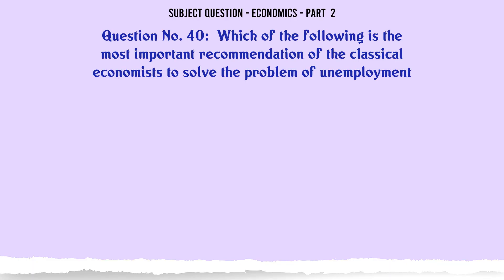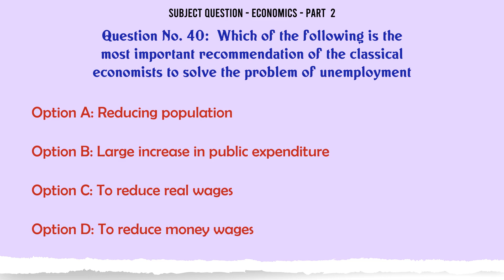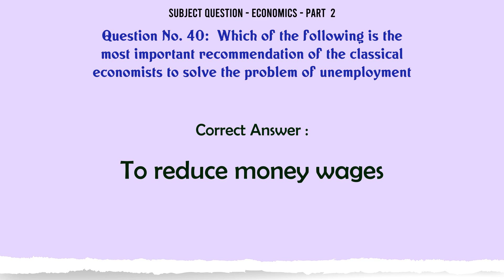Which of the following is the most important recommendation of the classical economists to solve the problem of unemployment? A. Reducing population. B. Large increase in public expenditure. C. To reduce real wages. D. To reduce money wages. The correct answer is: To reduce money wages.